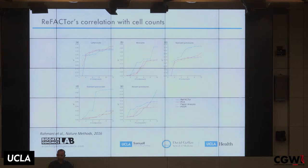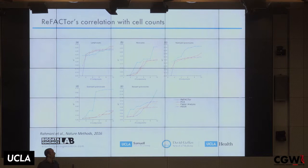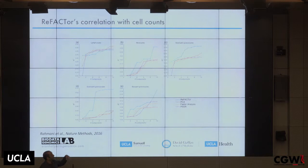ReFACTor works really well in practice, at least in methylation data, because the signal there is truly sparse. The x-axis shows the number of components used in sparse PCA; the y-axis shows the correlation between true cell counts (ground truth) and estimated cell counts. We consistently get better results than PCA, factor analysis, and PEER — a method widely used in gene expression.